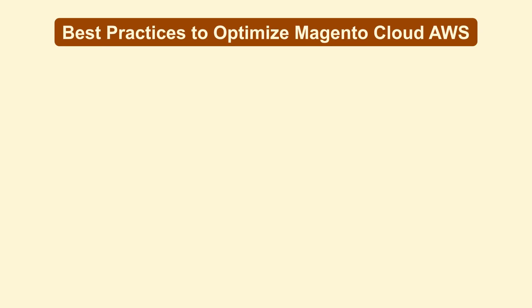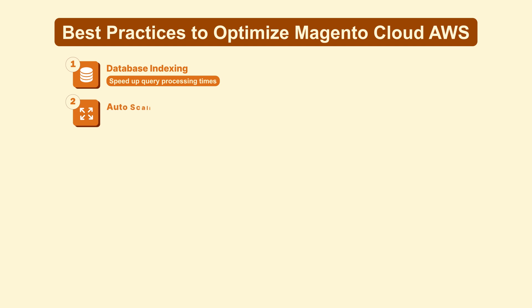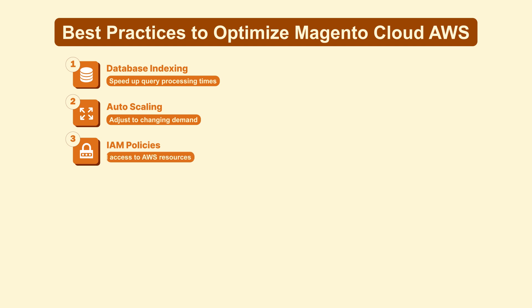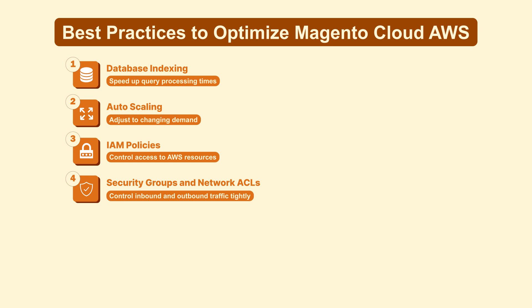Next, let's discuss best practices. Properly index your database to speed up query processing times. Set up autoscaling for EC2 instances to adjust to changing demand. Implement strict IAM policies to control access to AWS resources. Configure these to control inbound and outbound traffic tightly.